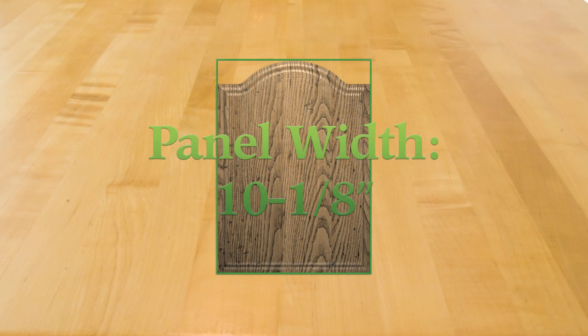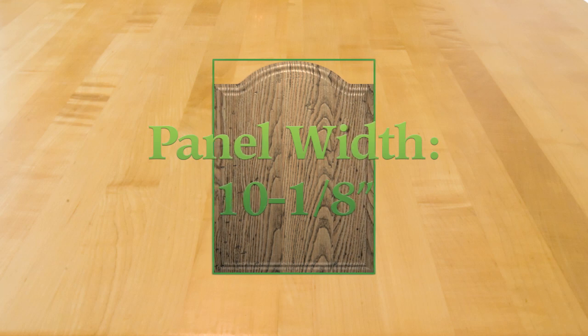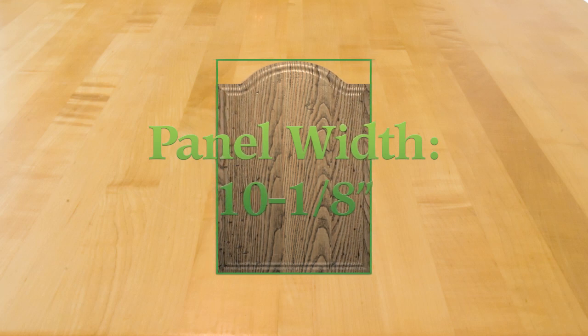During summer, at high humidity, the wood may have swelled to its maximum, so you can deduct 1/8 inch or less. During winter, at low humidity, the wood may have shrunk to its minimum, so you must deduct at least 1/4 inch. We'll rip the panel for our door 10 1/8 inches wide.